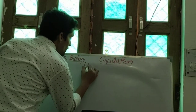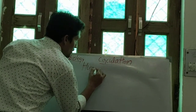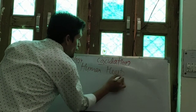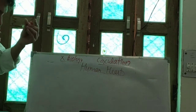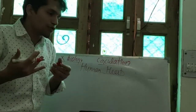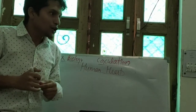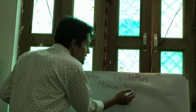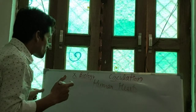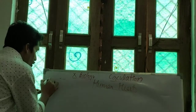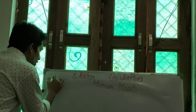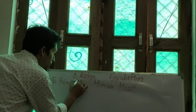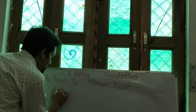Human heart. Today we will discuss about the anatomy and morphology of the human heart. Basically the human heart is a closed fist-sized structure whose only work is to pump the blood.